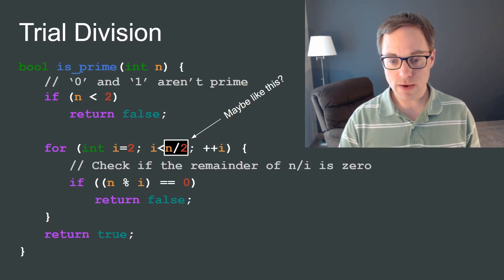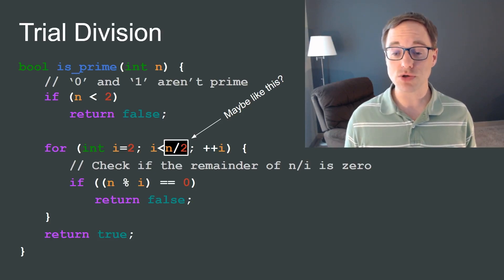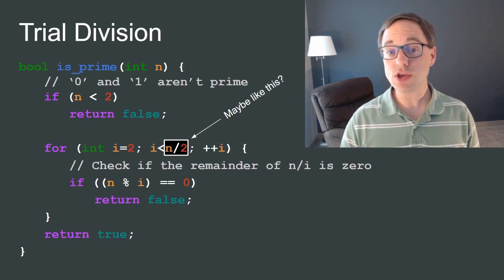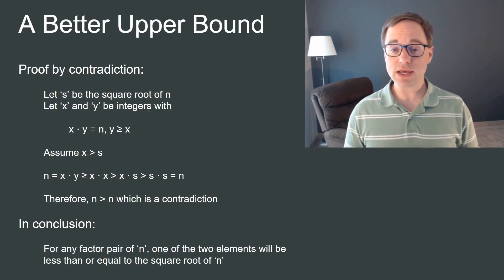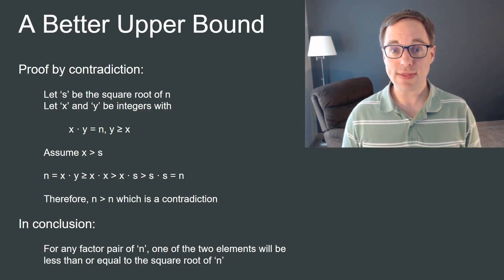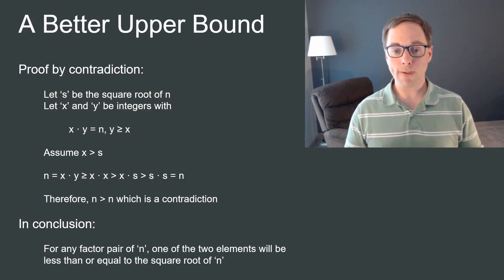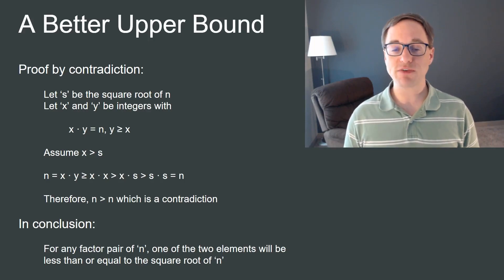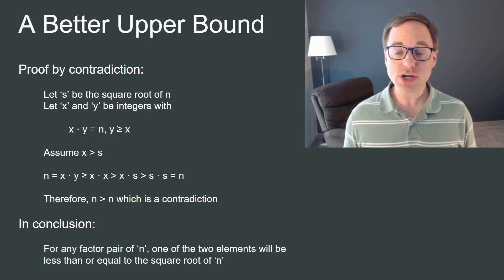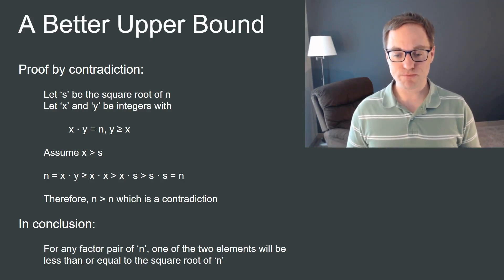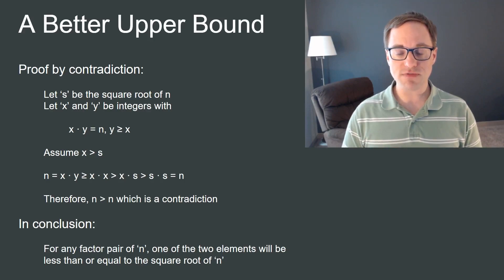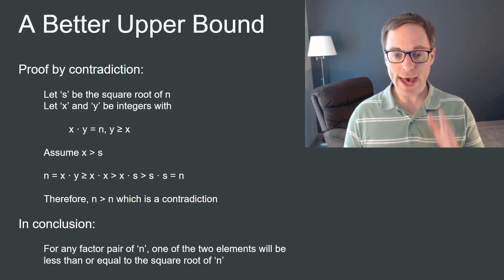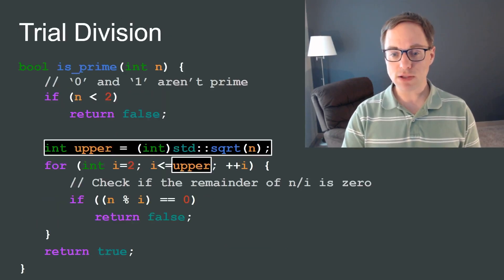Going back to our code for a moment, your intuition might be that we should just search up to n divided by 2, since the smaller divisor from each pair should be less than that. And that's not wrong, but we can do better. We can actually prove that the upper bound for the smaller divisor should be the square root of n rather than n divided by 2. And that's because if both elements of a factor pair were greater than the square root of n, then their product would have to be greater than n itself. But that's a contradiction because we know that their product must be precisely equal to n. Now, if you're interested in the details of that proof or you didn't quite follow what I just said, you might want to pause the video and consider this slide more carefully.